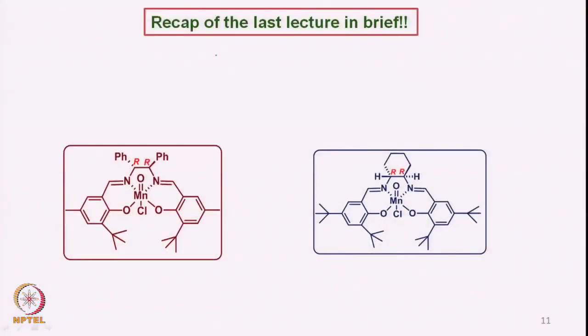We initially looked at how C2 symmetry-based 1,2-diamines can be prepared and how we can get the aldehydes, especially the salicylaldehyde. These are not easy to prepare, and therefore we looked at methods for making them. We need a substituent ortho to the hydroxy group and a substituent para to the hydroxy group — that is what is required.